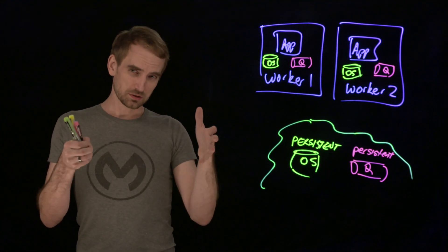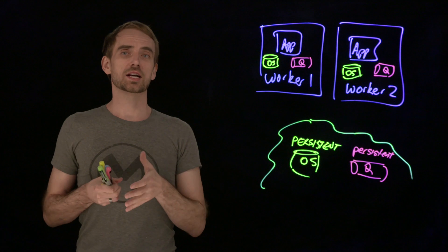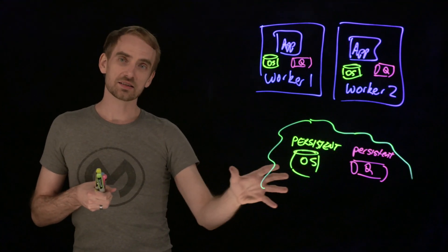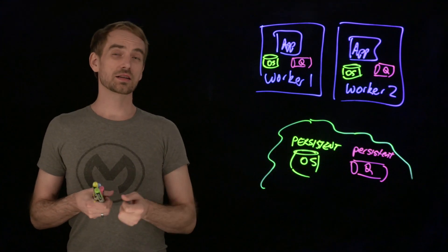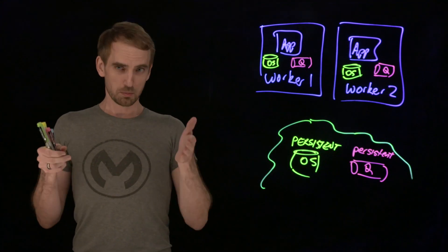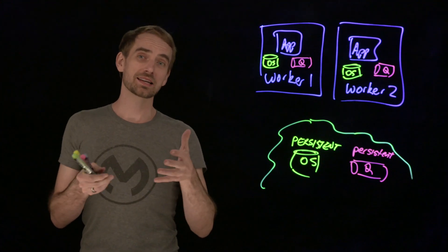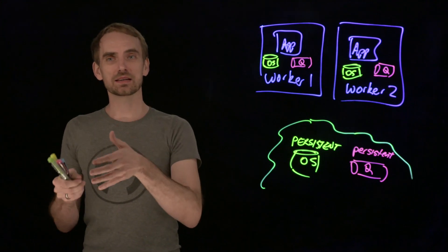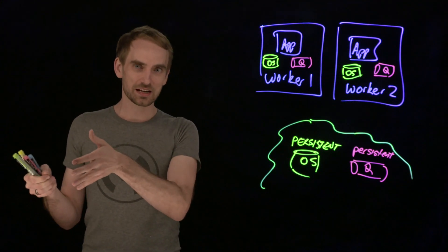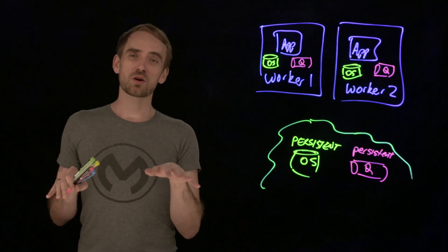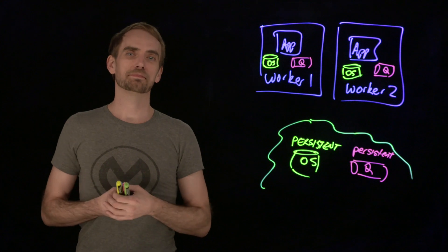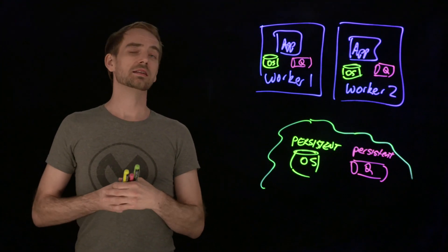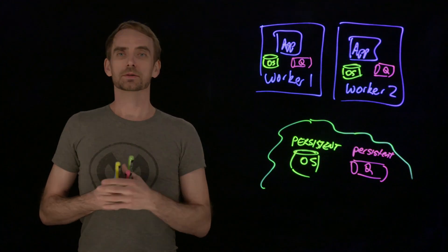These are all scoped to the application. Although the state is shared and externalized, it is still per application — so App A can see its object store, App B can see its object store, they don't overlap. That's the option for persisting state in CloudHub.